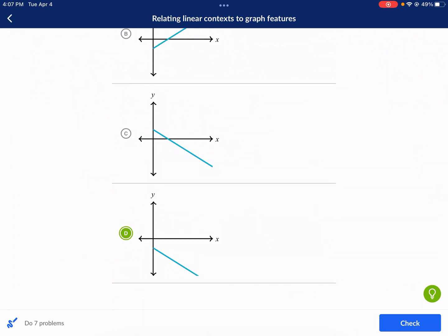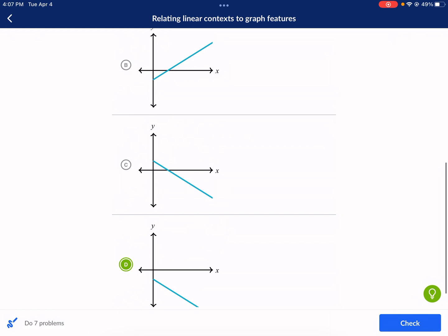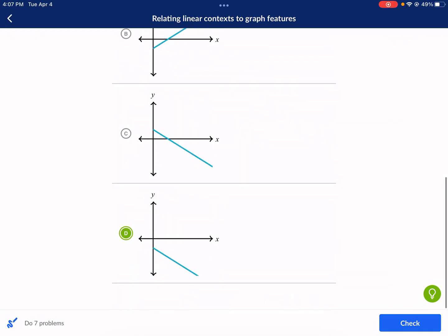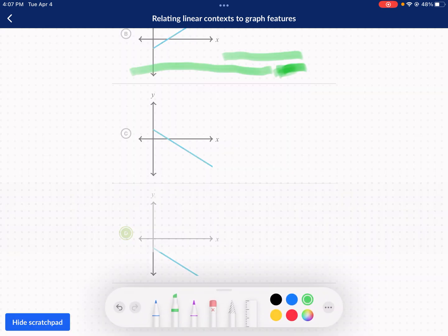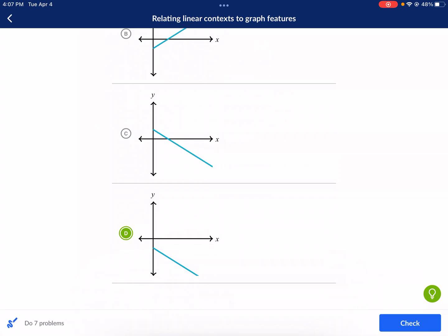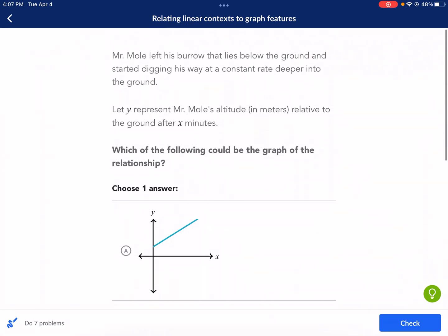So we start below ground and we start digging deeper into the ground. This is below ground because here is 0. That would be the altitude in meters, 0 meters above or below ground. And this would be below ground, like negative 2 meters as an example. And then going at a constant rate further into the ground.